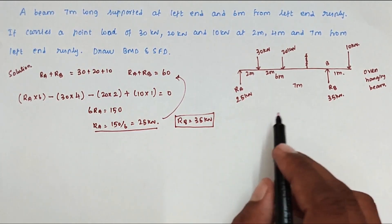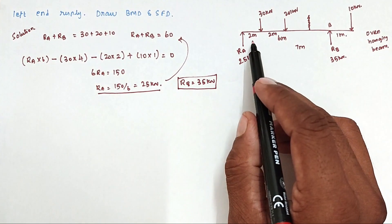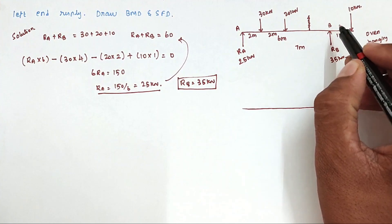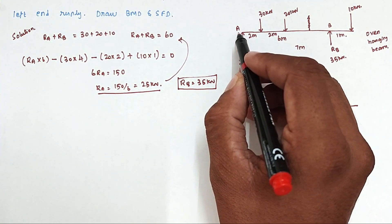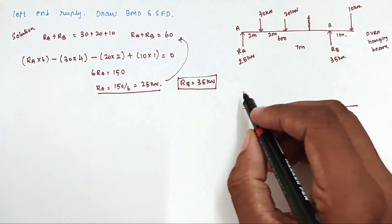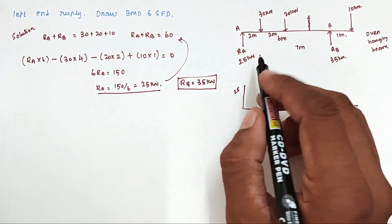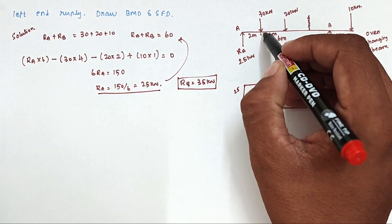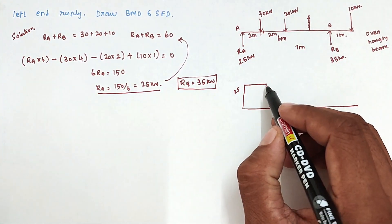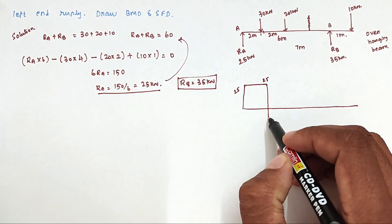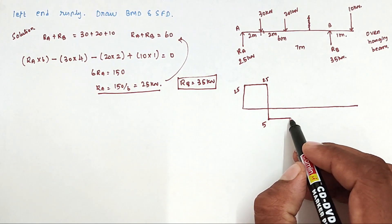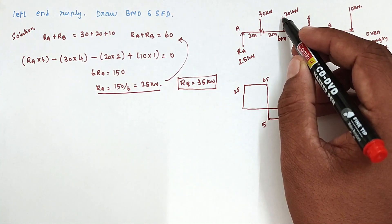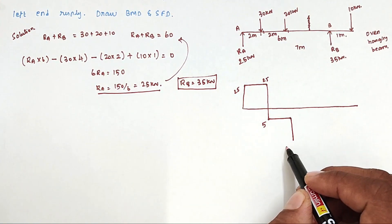Using these reactions, we can draw the shear force diagram. At point A, on the left side there are no forces, and on the right side we have the upward reaction of +25 kN. This is maintained until the 30 kN point load. That load acts anticlockwise, so 25 − 30 = −5 kN. Then at the 20 kN load, again anticlockwise: −5 − 20 = −25 kN.